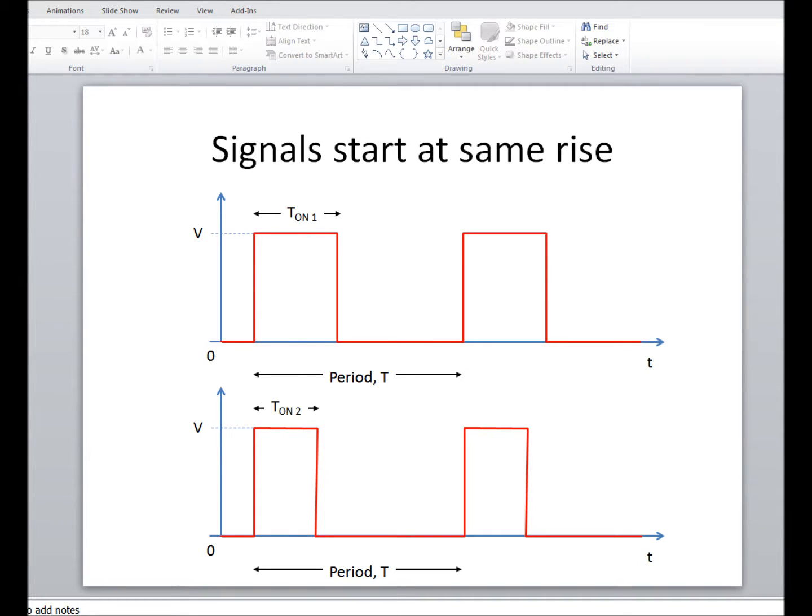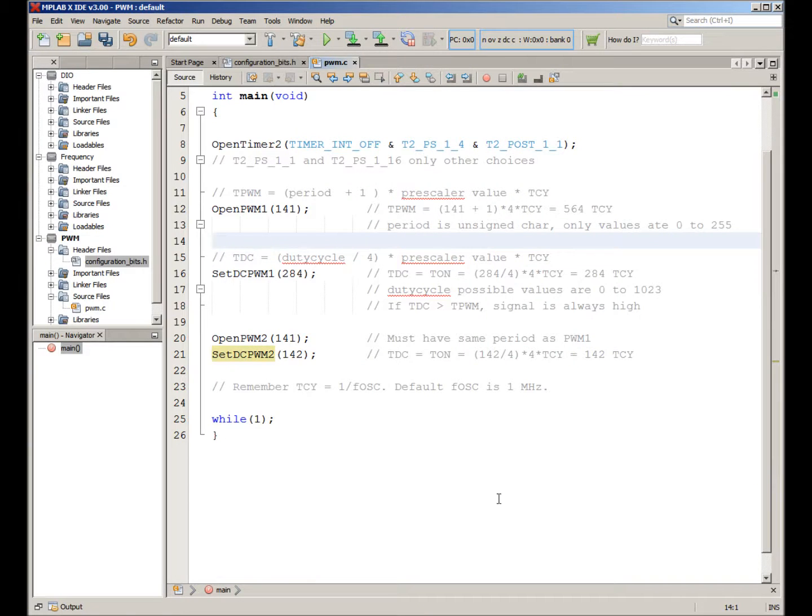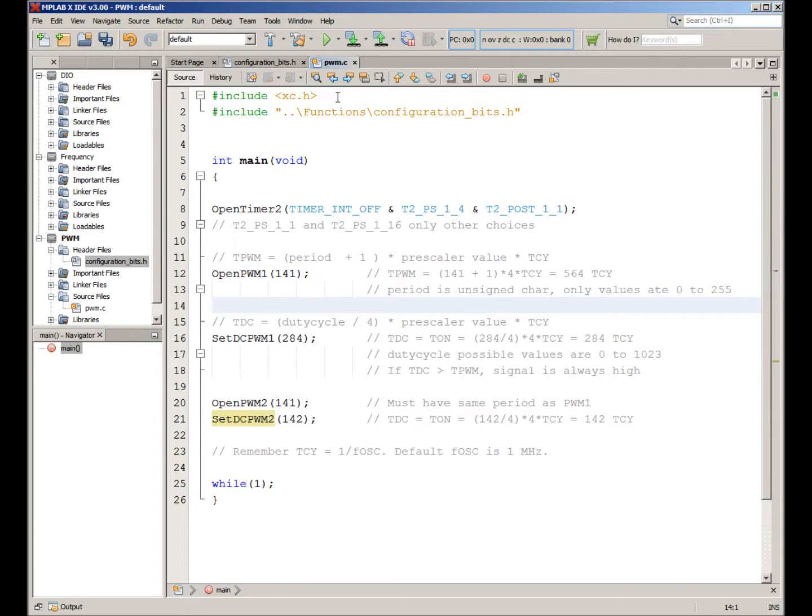So let's go and look at the code for this. We need our typical xc.h file because we're using functions that refer to the PIC. And as we said, configuration bits, we almost always want that. Now PWM is a timing feature. And the timer that's associated with it is called OpenTimer2. There's only one setting that we have to worry about. These other two settings, you leave them like that. Timer Int Off and T2 Post 1 to 1. This guy is a number that affects the signals that we get out. We only have three choices. These are multipliers for our signal. They can only be 1, 4, or 16. Those are the only possible choices. No other choices for OpenTimer2.